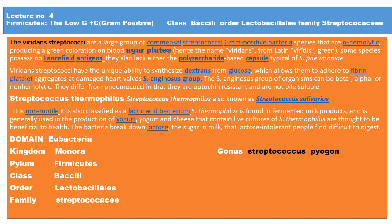The Viridans streptococci are a large group of commensal gram-positive bacteria that are alpha hemolytic, producing a green coloration on blood agar plates — hence the name 'Viridans,' from Latin 'viridus' meaning green. Some species possess no Lancefield antigens, while some possess a polysaccharide capsule similar to but distinct from Streptococcus pneumoniae.